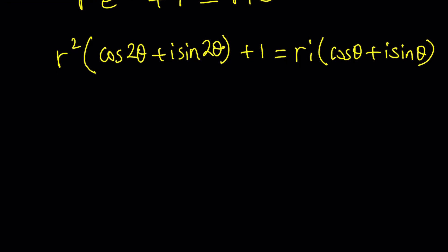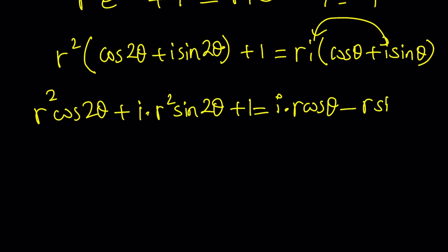Plus 1 and Ri and e to the iθ can be written as cosine θ plus i sine θ. Now next thing we're going to do is distribute: R² cosine 2θ plus i times R² sine 2θ plus 1 equals i times R cosine θ. And when you multiply Ri times i, you're going to get i², which brings in minus 1 because i² is minus 1. It's going to be minus R sine θ, no i.